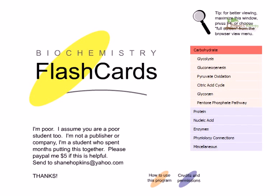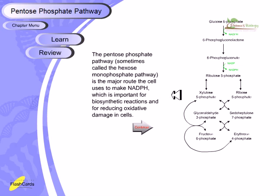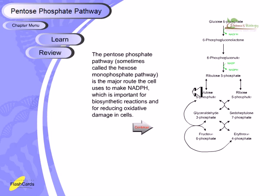In this video we will be talking about the pentose phosphate pathway, which is a very important pathway of carbohydrate metabolism. This pathway, sometimes also called the hexose monophosphate pathway, is a major route the cell uses to make NADPH, which is important for biosynthetic reactions and for reducing oxidative damage in cells.